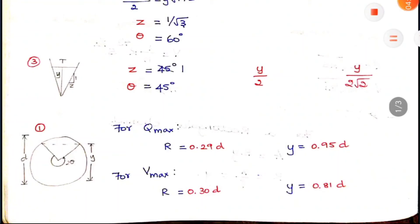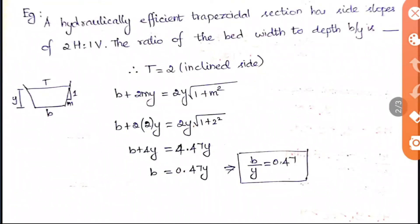Example: A hydraulically efficient trapezoidal section has side slopes of 2 horizontal to 1 vertical. Find the ratio of bed width to depth, b/y. The slope, angle, and condition that top width equals 2 times the inclined side are used. For a trapezoidal section, theta equals 60 degrees and slope equals 1 by root 3.